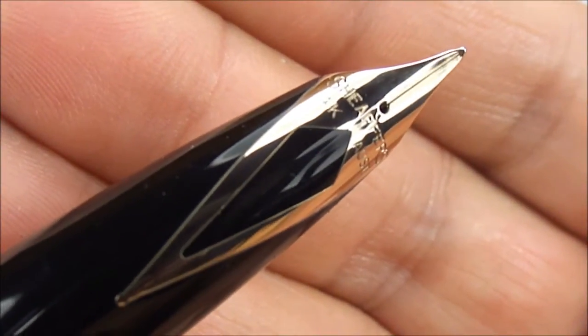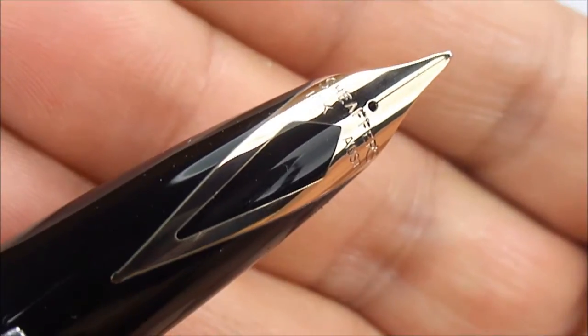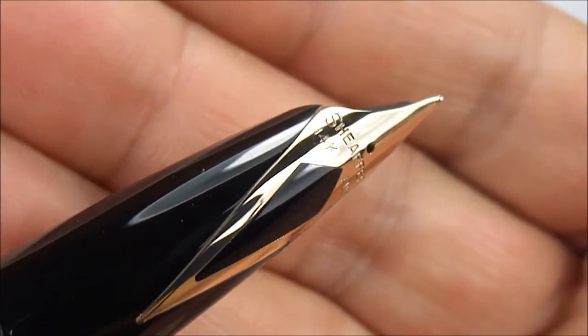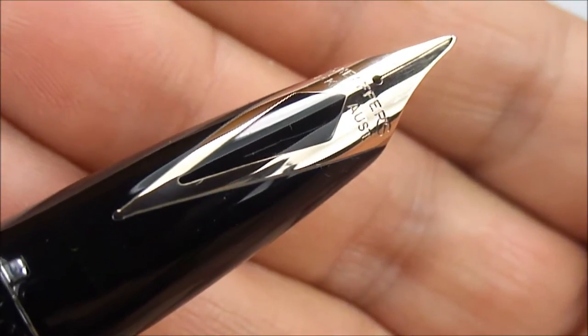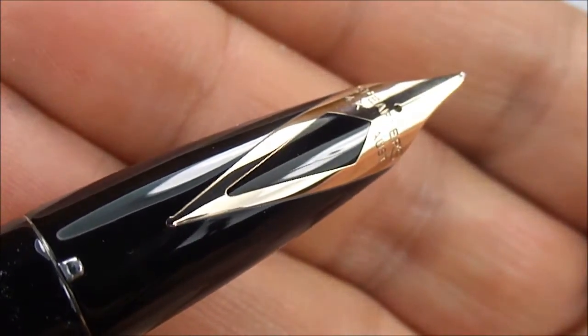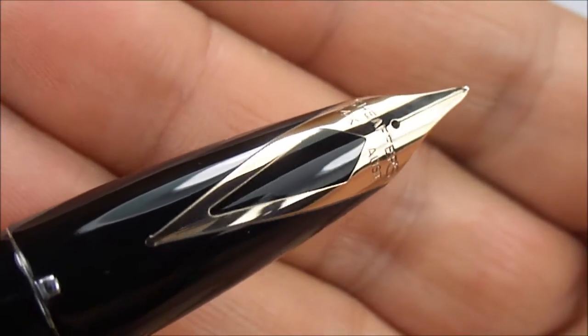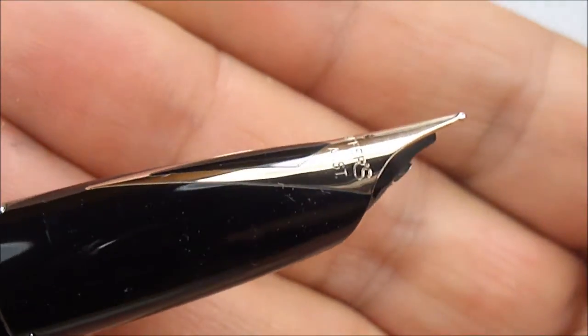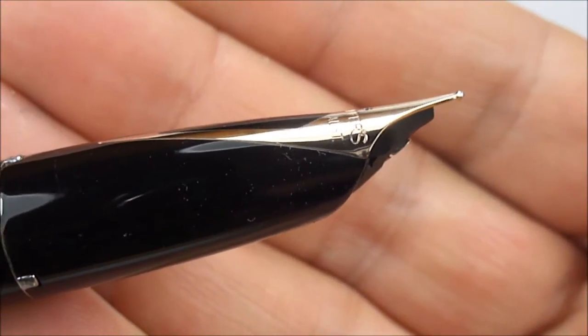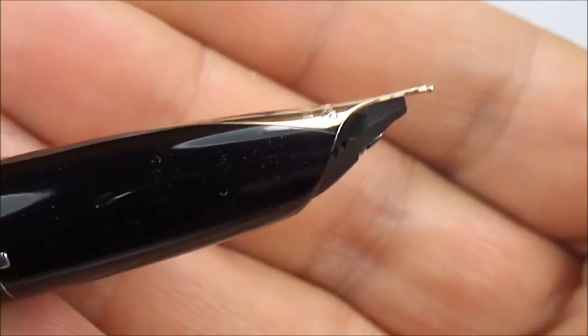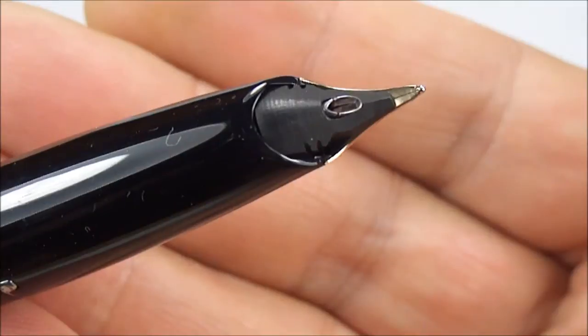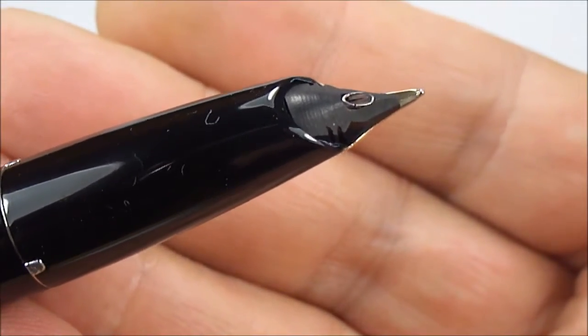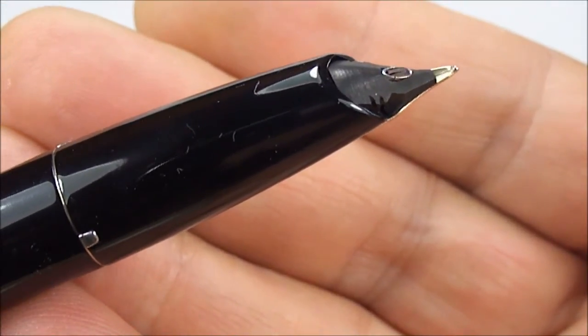If we keep it nice and still for you, hopefully you can see there, it says Schaefer's 14 karat gold Australia. So again, the nib, as it states on the cap as well, is made in Australia. Let's give you a sideways view there. And if we turn it over there, you can see the feed. You can see the snorkel sat in the feed there as well. Absolutely gorgeous.